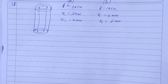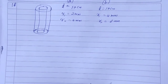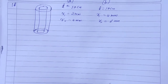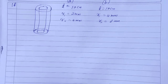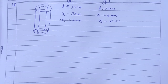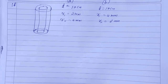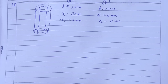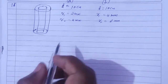HC Verma solution, Chapter 31, Capacitors, Question 18. A cylindrical capacitor is constructed using two coaxial cylinders of the same length 10 centimeters and radii 2 mm and 4 mm — calculate the capacitance. Part B: another capacitor of the same length is constructed with cylinders of radii 4 mm and 8 mm — calculate the capacitance.